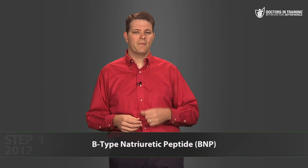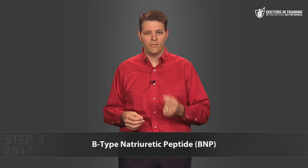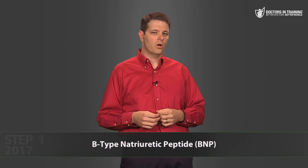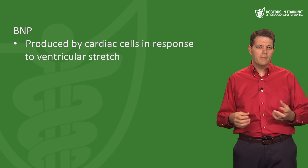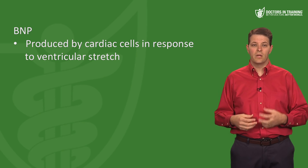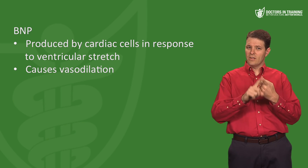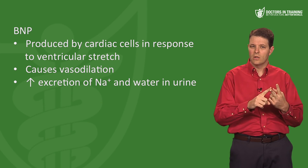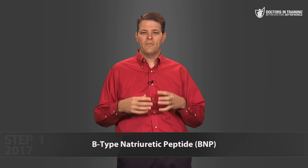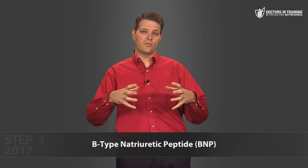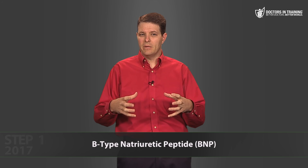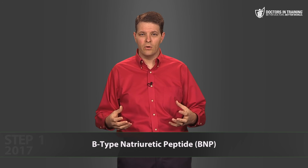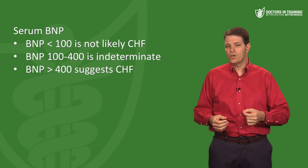A useful lab test in heart failure is BNP — B-type natriuretic peptide (also called brain natriuretic peptide). BNP is a hormone produced by cardiac ventricular cells in response to ventricular stretch. It causes vasodilation and is natriuretic, increasing excretion of sodium and water in the urine. When the left ventricle is failing and end-diastolic volume rises, myocytes secrete BNP, causing diuresis and vasodilation, both of which lower preload.